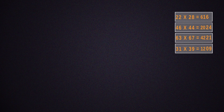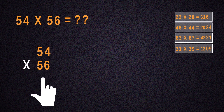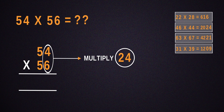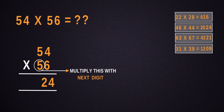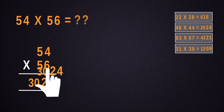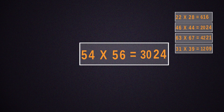Let's see how to multiply 54 by 56. For that, the number obtained by multiplying 4 by 6 will be 24 and that should be put down. Then, multiply 5 with its next digit, which is 6. Place the result next to 24 and we get 3,024 as the answer.